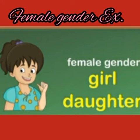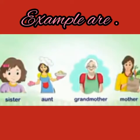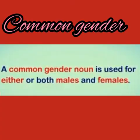Now, feminine gender. Girl and daughter. Women, girls, and female animals are of the feminine gender. Sister, aunt, grandmother, mother — these are the feminine gender.